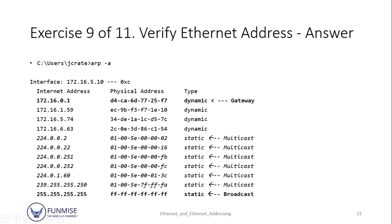Here we have a Windows computer showing the command prompt with the ARP -A command output. The first line labeled 'interface' is the address of the actual interface itself. In this example, 172.16.0.1 is the gateway's IP address. At the very bottom, 255.255.255.255 with a corresponding all-F's physical address corresponds to a broadcast. Above that, you'll see several entries that look like 01-00-5E — those are multicast physical addresses.